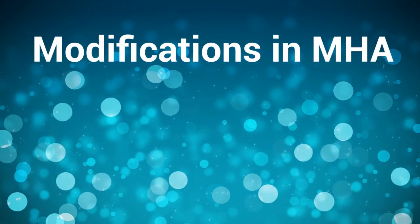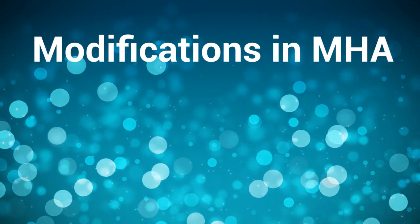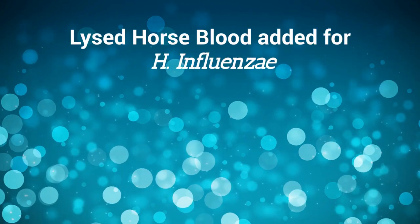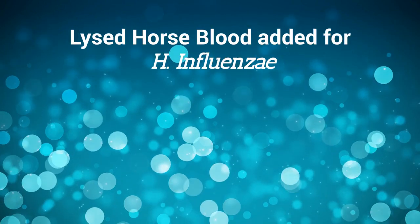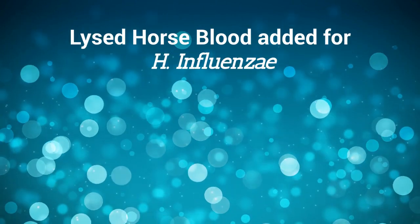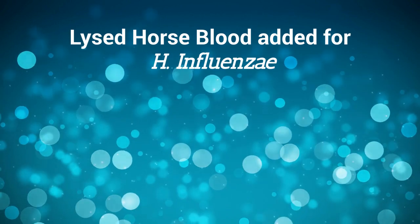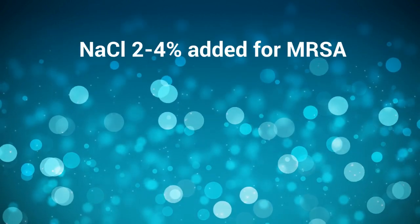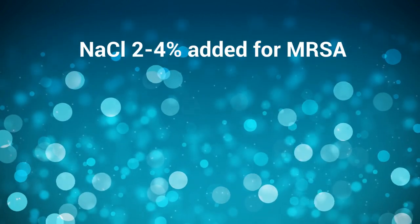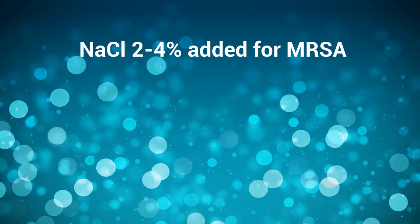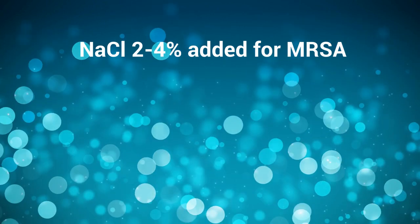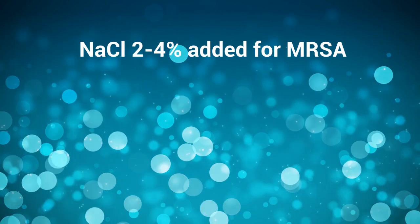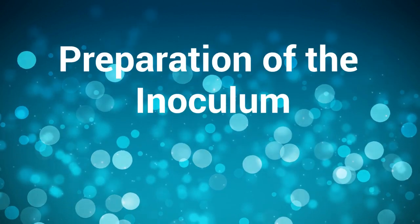Some important modifications of Mueller-Hinton Agar include: lysed horse blood is added to Mueller-Hinton Agar to support the growth of fastidious organisms such as H. influenzae. Sodium chloride at 2–4% should be added to the medium for testing methicillin-resistant Staph aureus isolates.